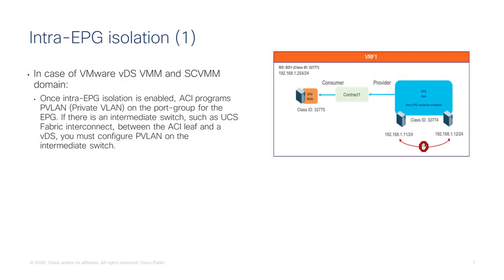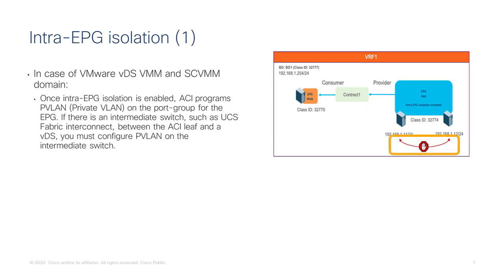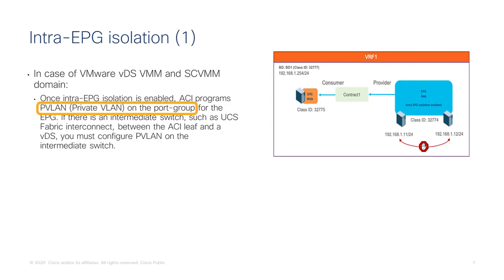Let's talk first about intra-EPG isolation. As the name implies, if you have two hosts within the same EPG, they cannot talk to each other, but they can still talk to another EPG via a contract. ACI achieves this by programming private VLANs — you don't need to know this detail, but if you have an intermediate switch, you need to ensure it also treats those VLANs as private VLANs to preserve the segmentation.